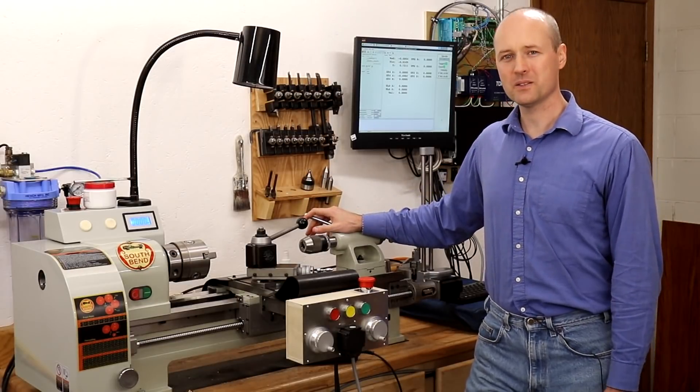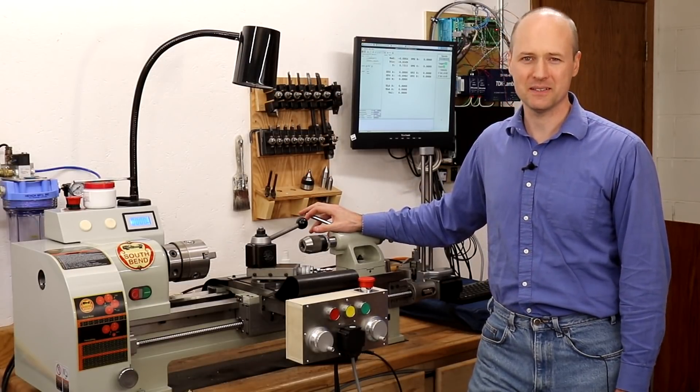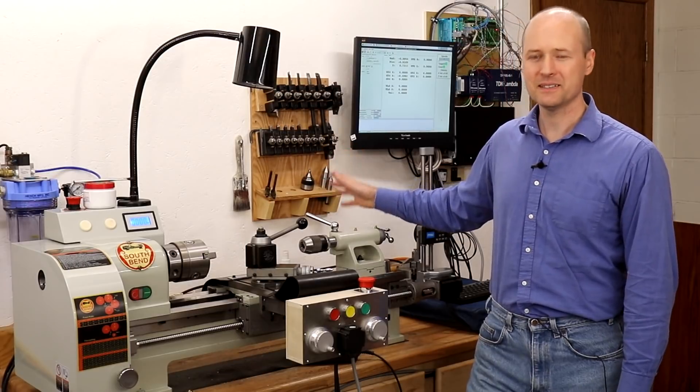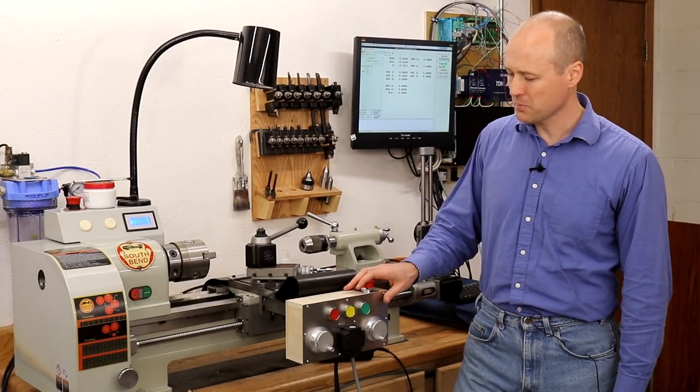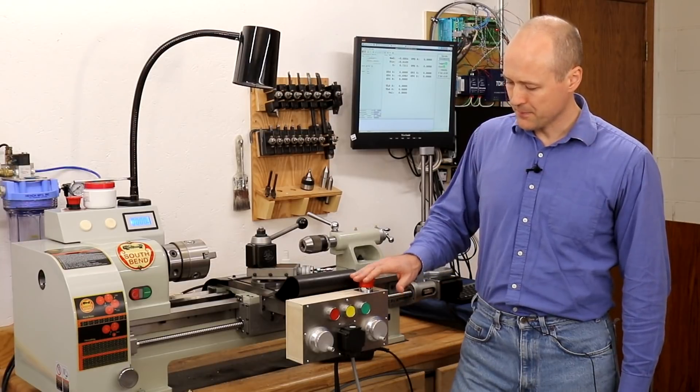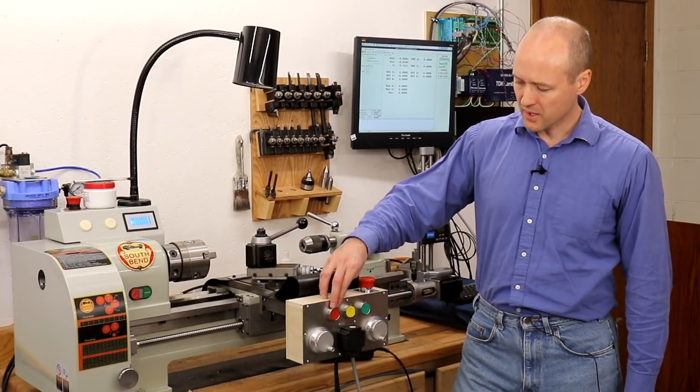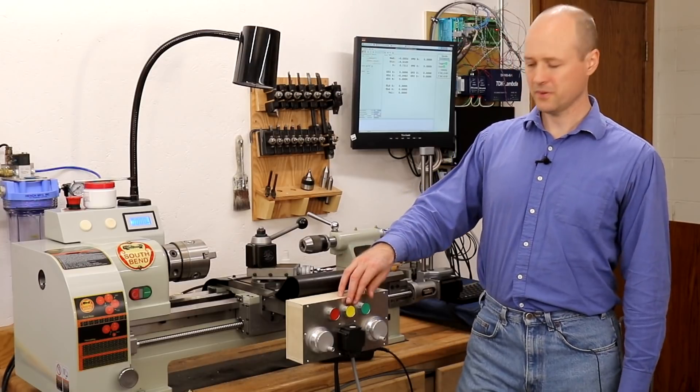I converted this South Bend SB1001 lathe to CNC using Linux CNC and a conversion kit from Billy Dirks. I made this control box. You have emergency stop and then three buttons to control start, stop, and pause/resume of your G-code.